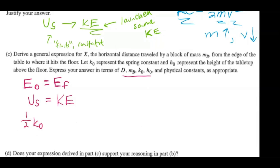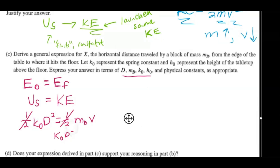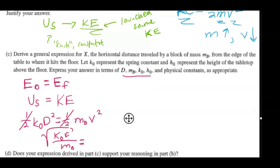So one half ko — they want us to represent the spring constant as ko — and then x squared, where x is just the compression distance, so we can call that d squared, equals KE, which is one half mb v squared. So one half ko d squared equals one half mb v squared. We isolate both sides so the one halves cancel out and solve for v, giving us v equals the square root of ko times d squared over mb.